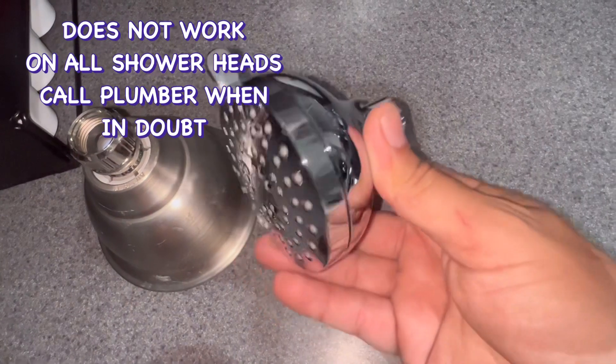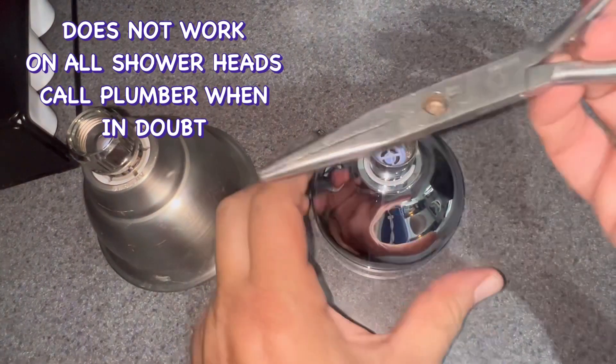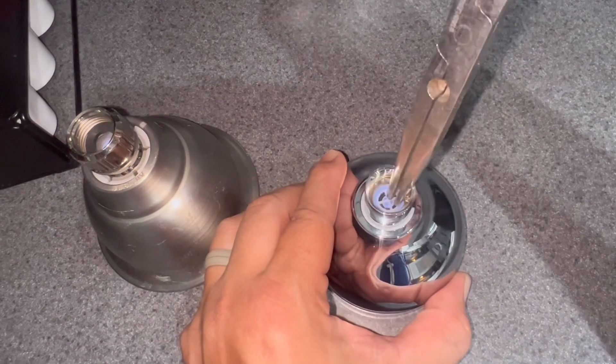They come in all kinds of different colors - you see red, green, blue, but these two particular shower heads are both Moen brand so they have this light blue one in them.